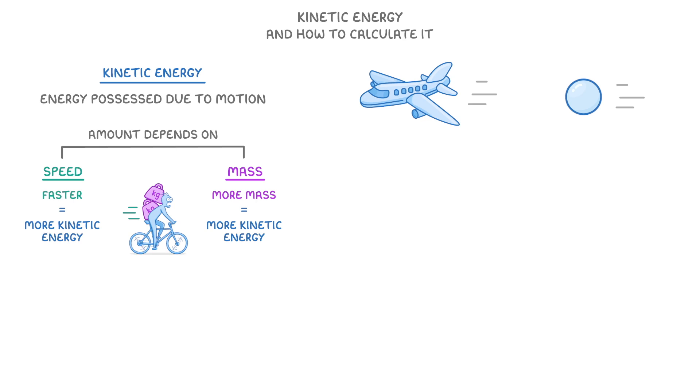So if our particle weighed 0.1 grams, but our plane weighed 20 tons, and both of them were travelling at 900 meters per second, the plane would have much more kinetic energy, because it has a much larger mass but the speeds are the same.